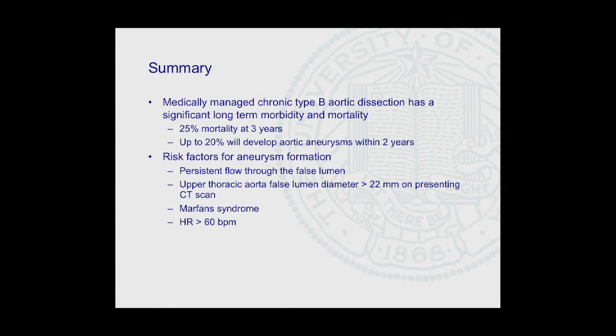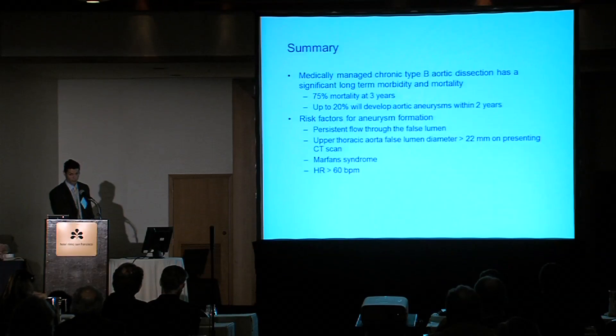In summary: medically managed chronic type B aortic dissection has significant long-term morbidity and mortality — 25% mortality at three years and 20% will develop aneurysms within two years. Risk factors for developing those aneurysms include persistent flow through the false lumen, upper thoracic aortic false lumen diameter greater than 22 millimeters, Marfan syndrome, and a heart rate greater than 60 beats per minute. Thank you.